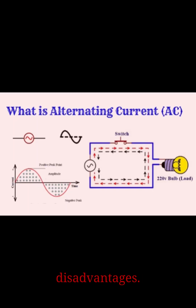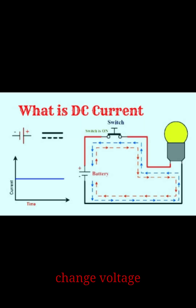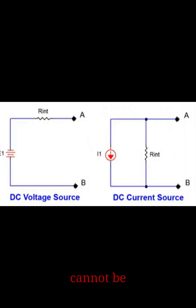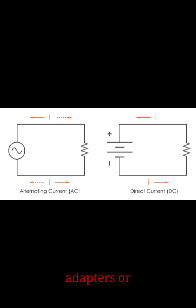Advantages and disadvantages of AC: AC is easier to transmit over long distances, can change voltage levels using transformers, and powers entire cities and industries. Its drawback is that it cannot be stored directly and needs conversion to DC via adapters or rectifiers.